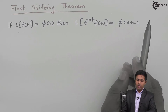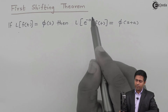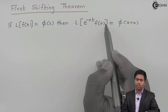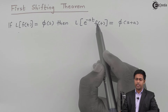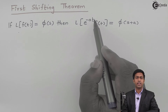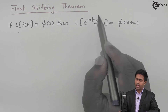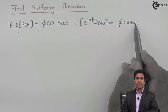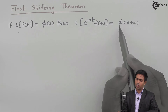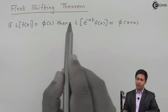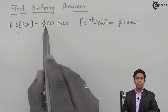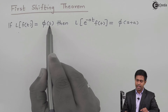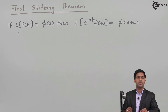So it means that whenever in Laplace our function is getting multiplied with the e raised to minus at term, then the answer will be F(s+a). We will get this value F(s+a) from F(s) by substituting — or you can say by replacing — s with s plus a.